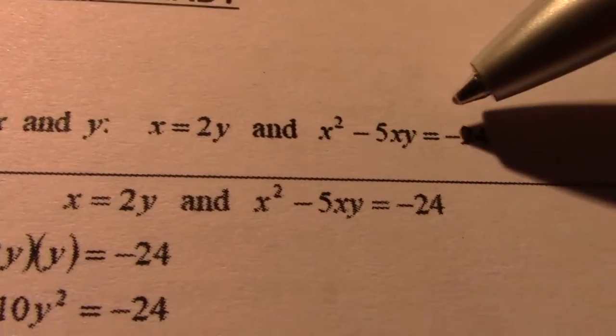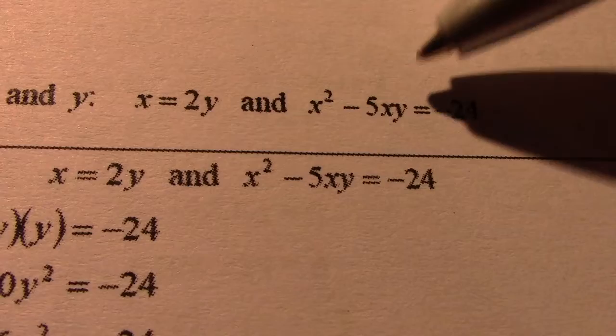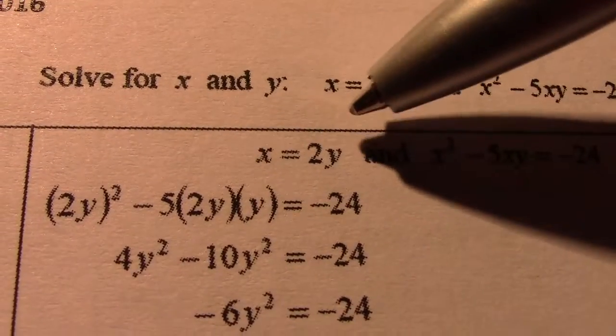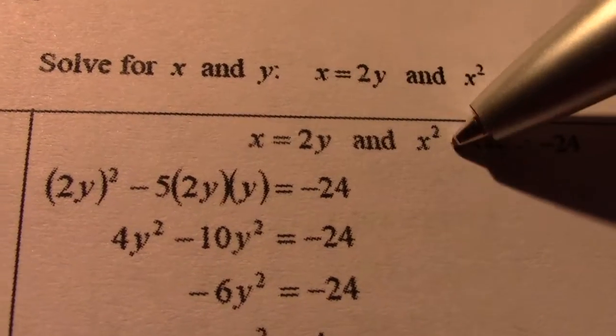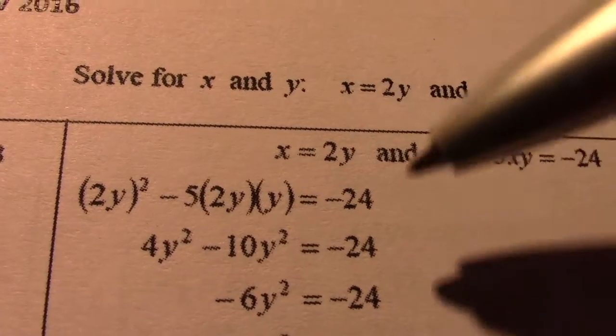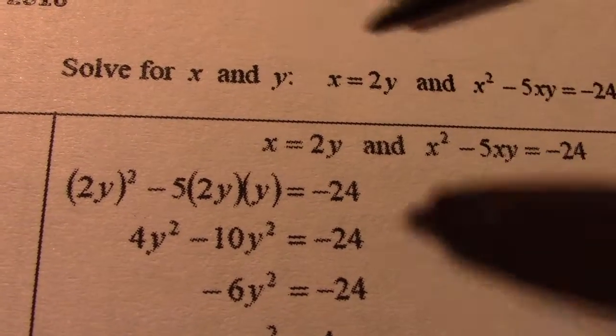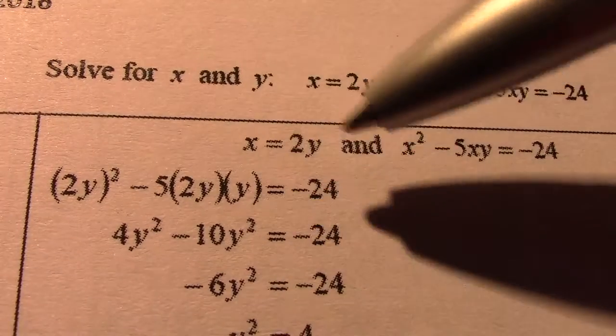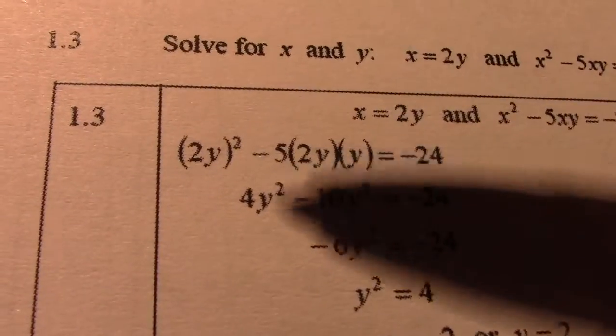So the objective, you see there, I have two unknown variables. I only want one unknown variable. So I have x equal 2y given. So x squared now becomes 2y squared, you see there. Minus 5xy becomes minus 5 times 2y in the place of x times y equal negative 24.